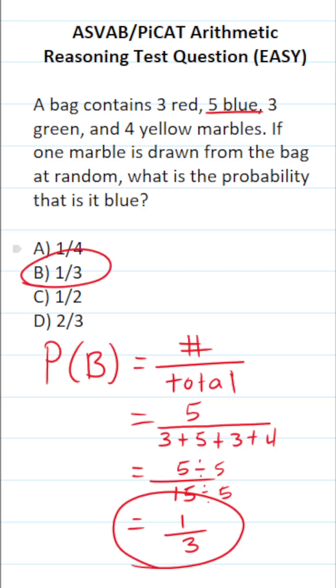Fifteen divided by five is three. So your odds of selecting a blue marble from the bag at random are one third, which is about 33.3% repeating. So this one is B, of course.